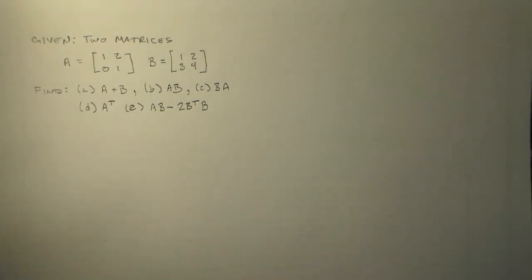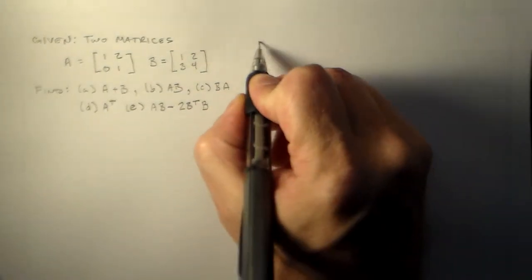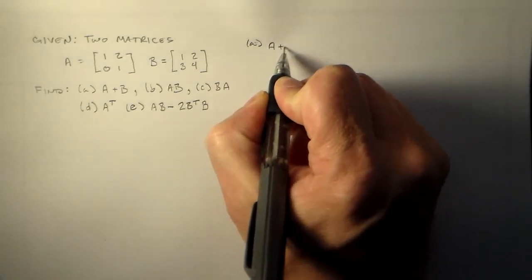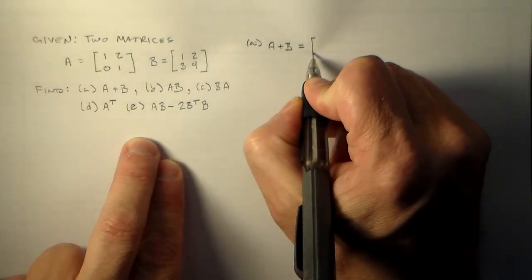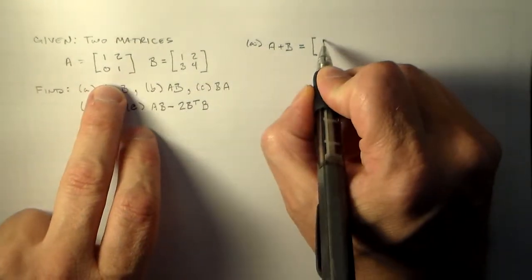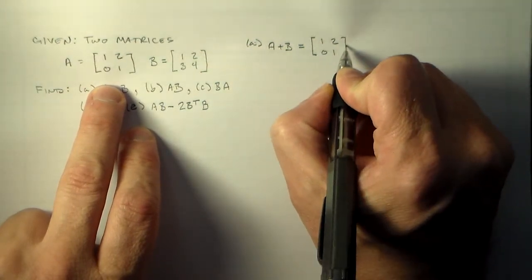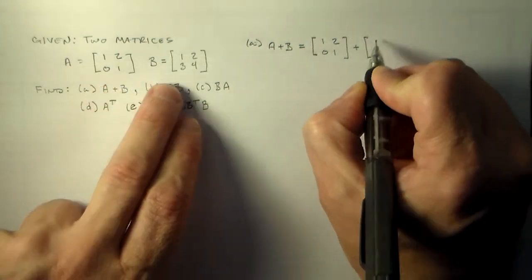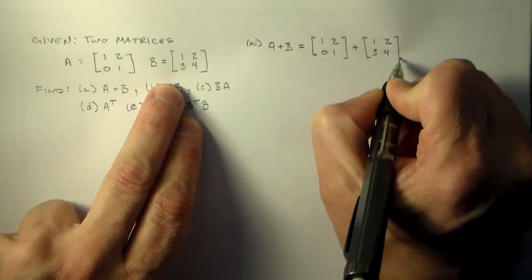So where should we start with this? We're going to do our addition. So we've got plenty of room over here. So we'll just do A plus B. And the first thing you do when you do something like this is you just go ahead and substitute these values in. A is 1, 2, 0, 1. Plus B, which is 1, 2, 3, 4.